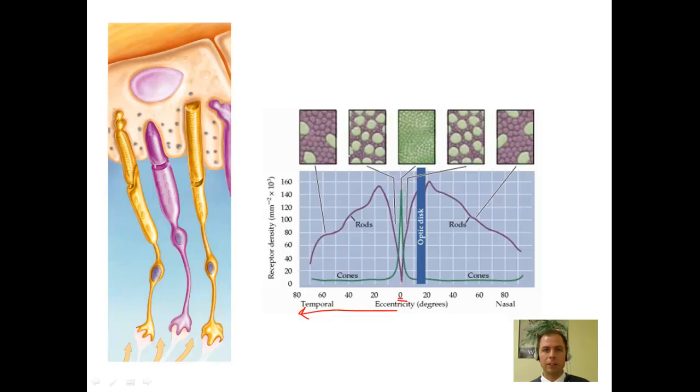However, as you extend laterally, that density decreases and you get rather a high density of rods. Similarly, as you proceed medially in your body or toward the nose, you see a likewise rise in your rods as you continue to the periphery of your eye, and a sharp decrease in cones.